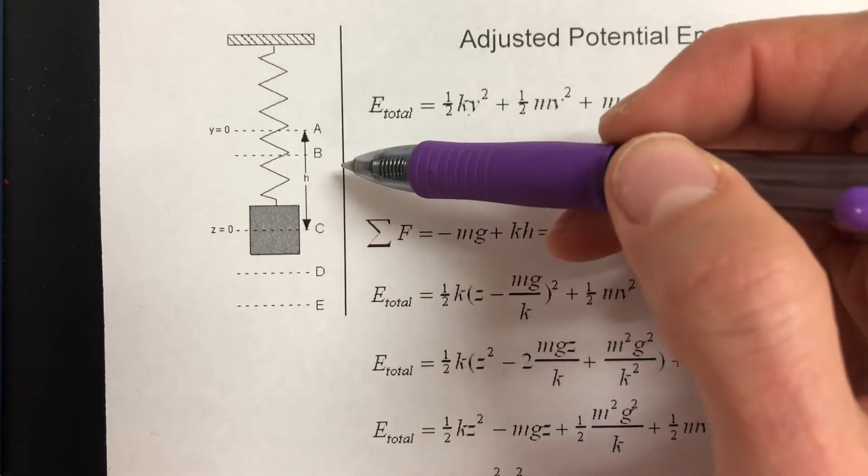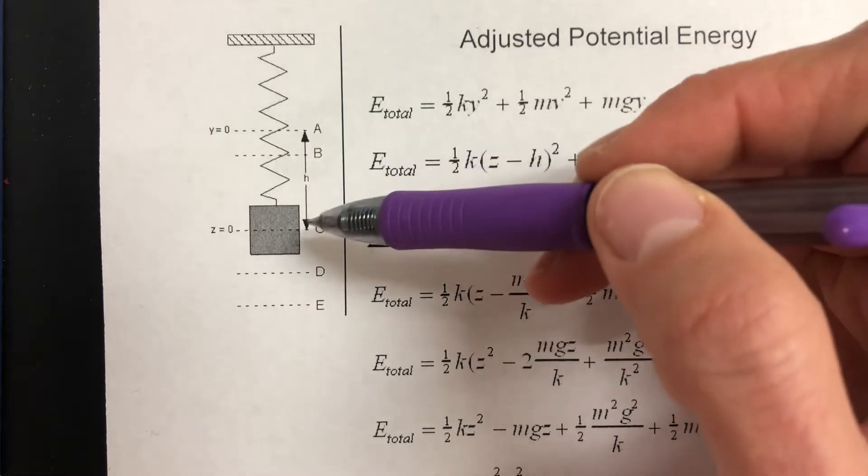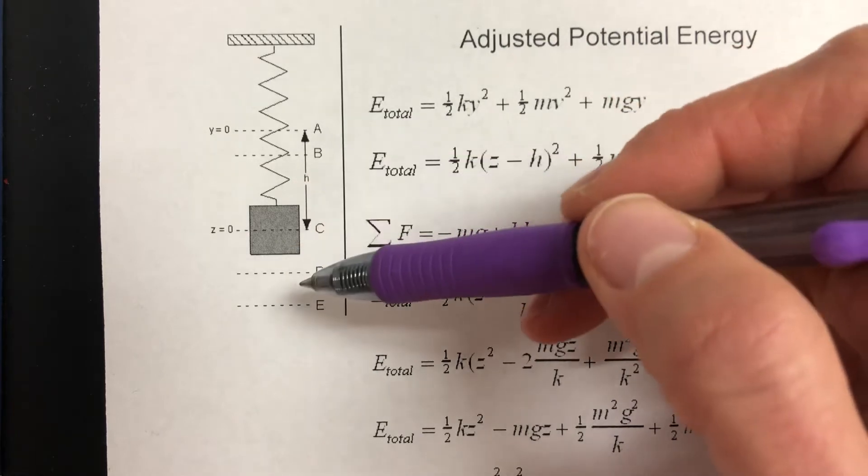As it goes up and down there are three energies that are changing: gravitational potential energy is going up and down, spring potential energy is going up and down, and kinetic energy is going up and down.